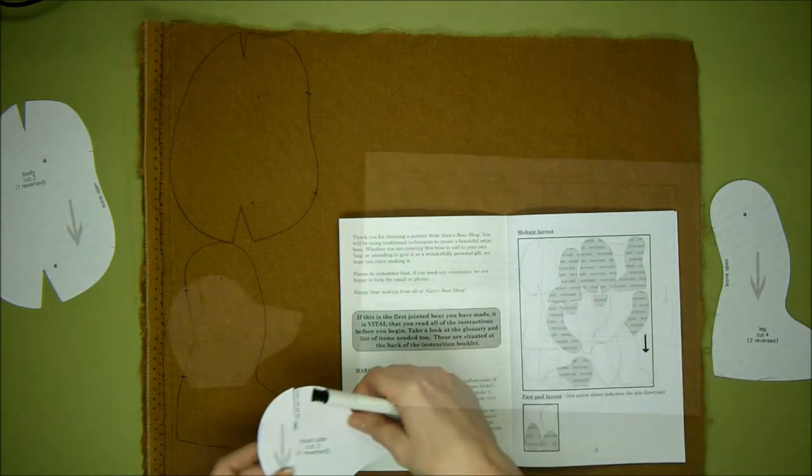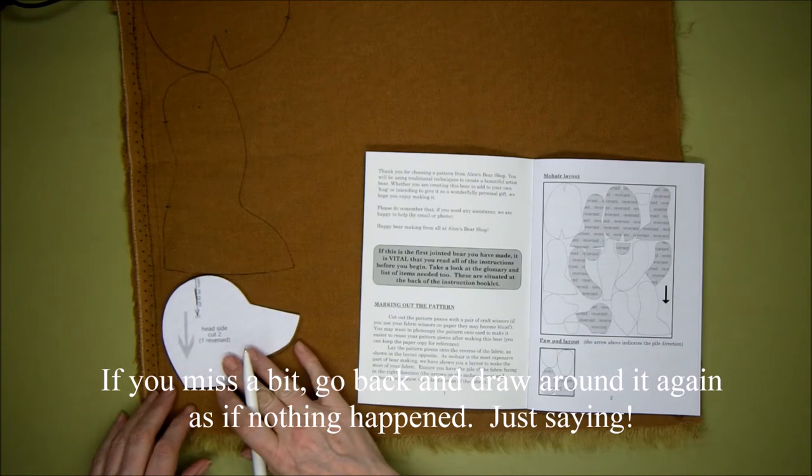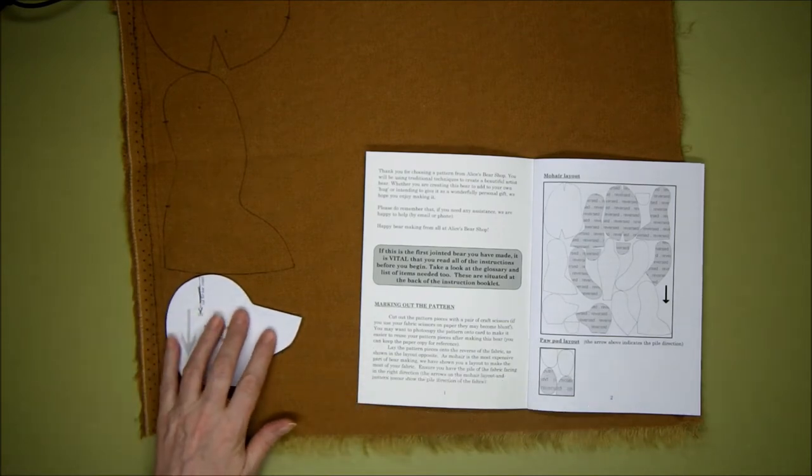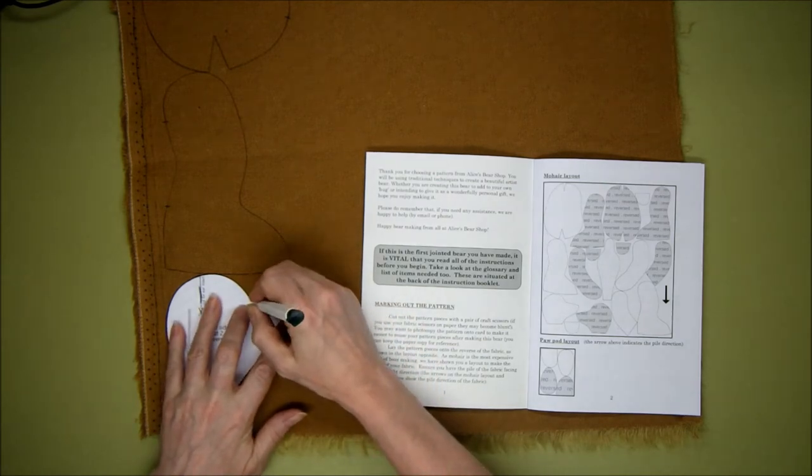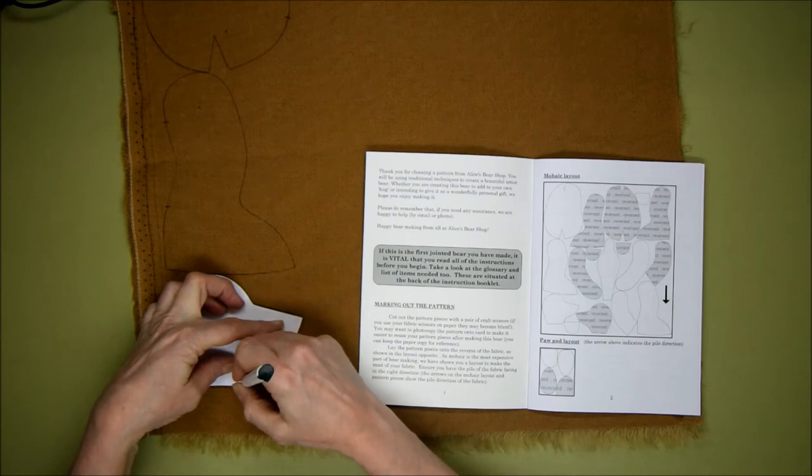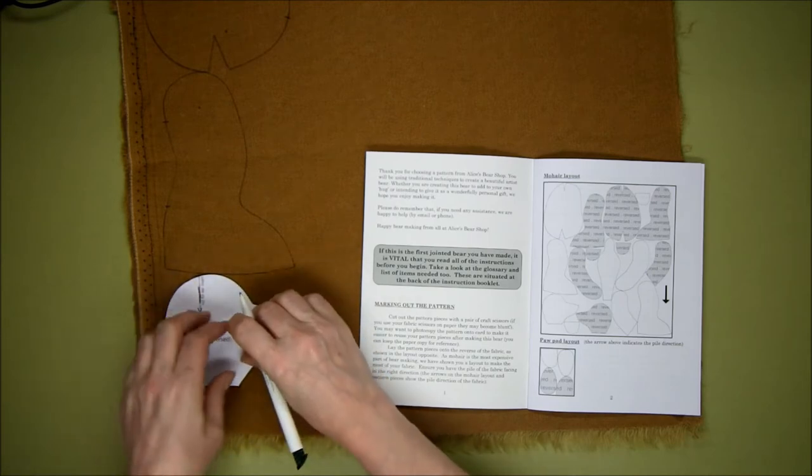Next, let's do the head. Of course with each of these we're checking that the pile direction is going in the right direction. We're going to draw all the way around again with our trusty biro.